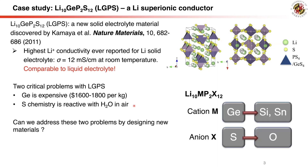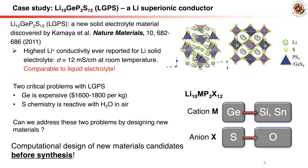Our idea is to design a new material to address these two problems: to replace germanium with more abundant and cheaper silicon or tin, and to replace sulfides with oxides, which are stable in air. We will show that new materials can be designed computationally before synthesis in the lab.